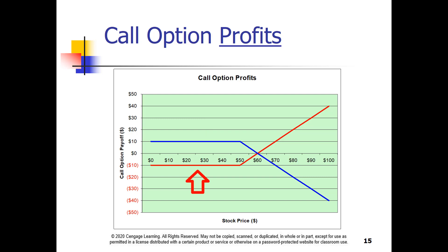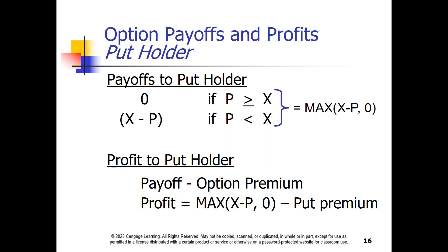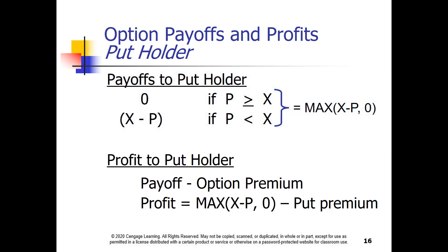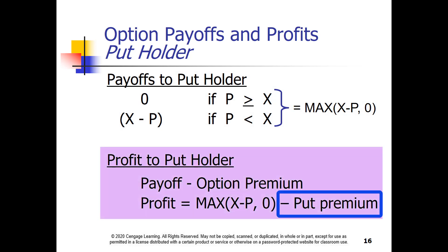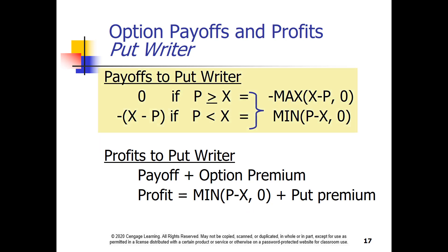It would seem that the payoff to puts would be the opposite of calls, but that isn't the case. The payoff to a put holder is again bounded on the lower end by zero and on the upper end by the strike price. Since the stock price P cannot drop below zero, X minus P cannot be more than the strike price X. The profit must be reduced by the premium paid for the option. As with the call, the payoff to the put writer is the exact negative mirror of the holder's. A put writer wants to sell the put and never hear from it again, pocketing the option premium — that's the best case.